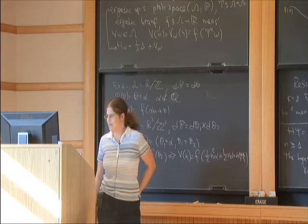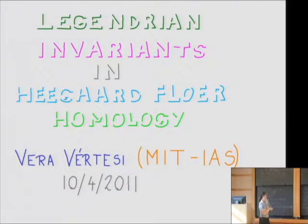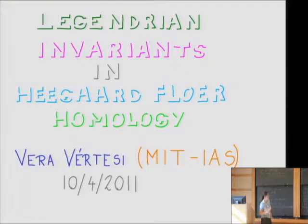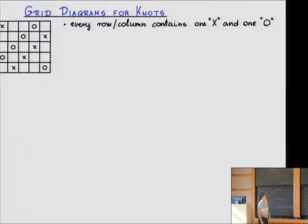This is becoming a pretty big field. I'm going to give you some ideas in the least general setting, which is about knots in S³, and then later generalize it for bigger ones. I'm going to define knot Floer homology for knots in S³, and this is done by using grid diagrams.